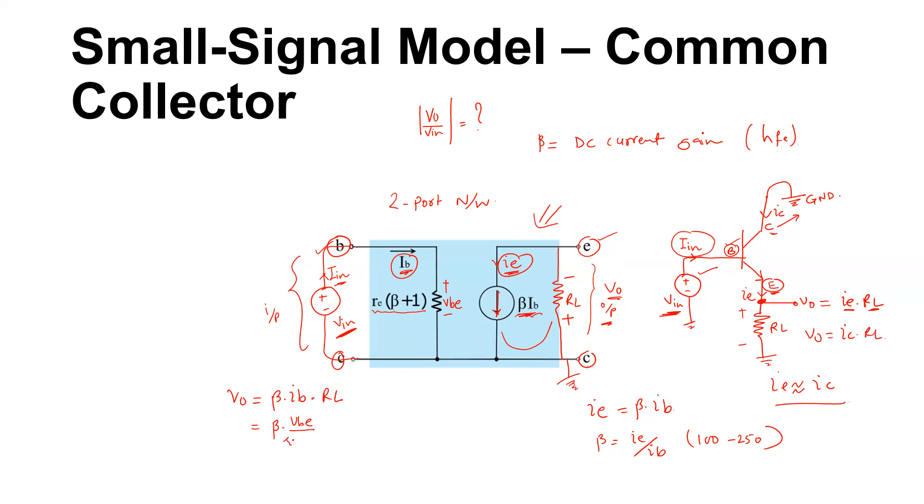We assume that if beta is very very greater than one, it can be simplified as Vbe divided by re times beta, times RL. So we assume that beta is very very greater than one.